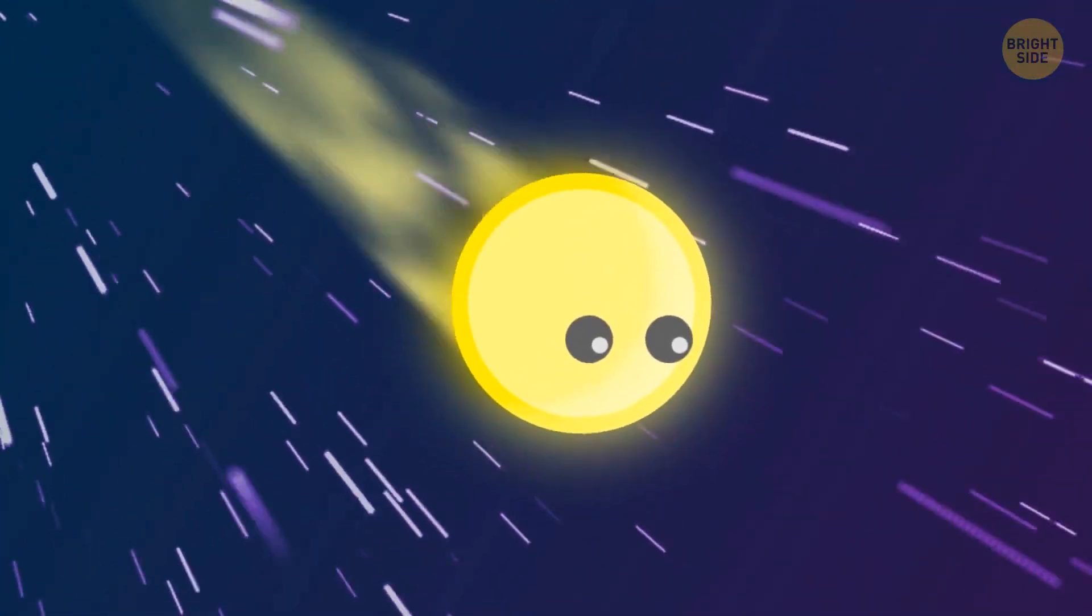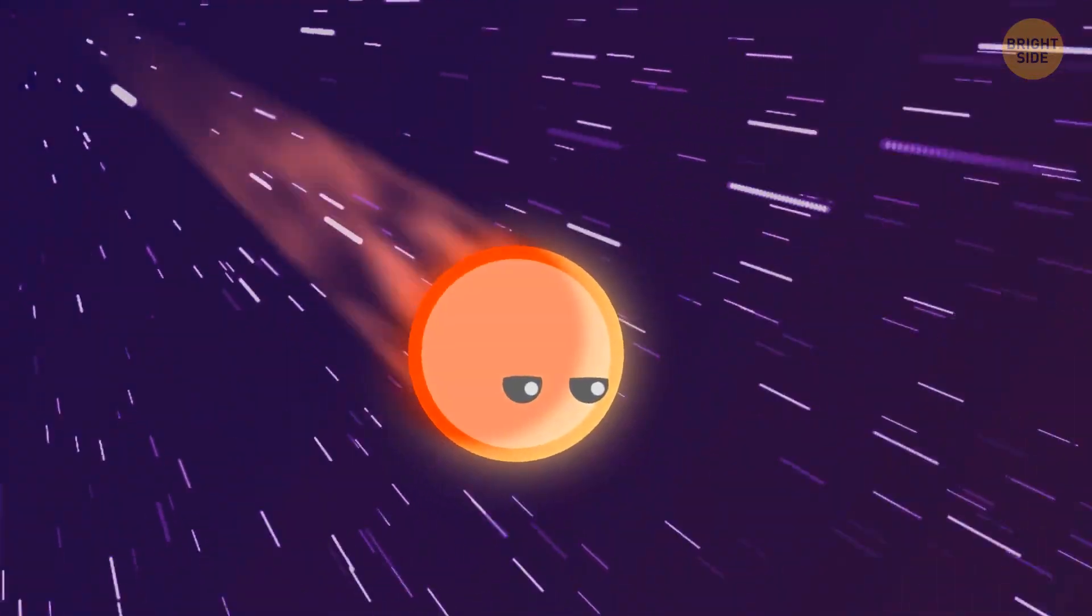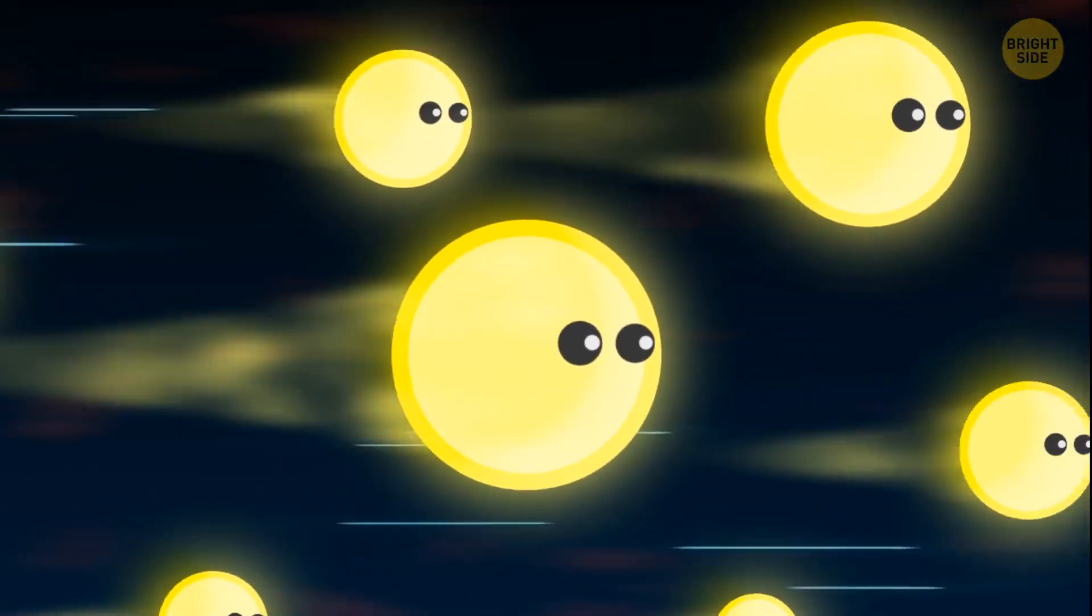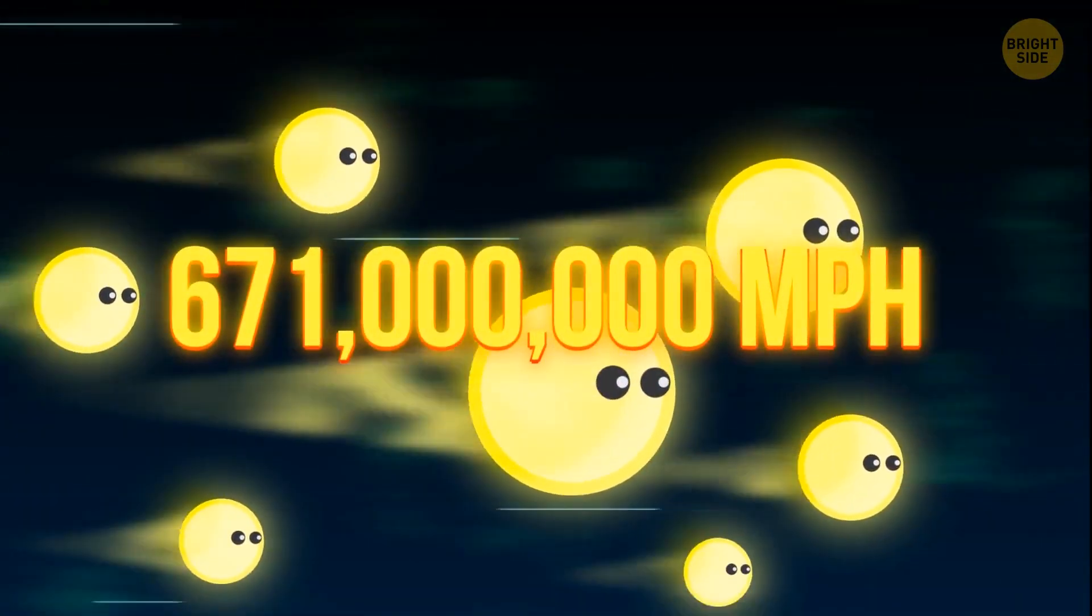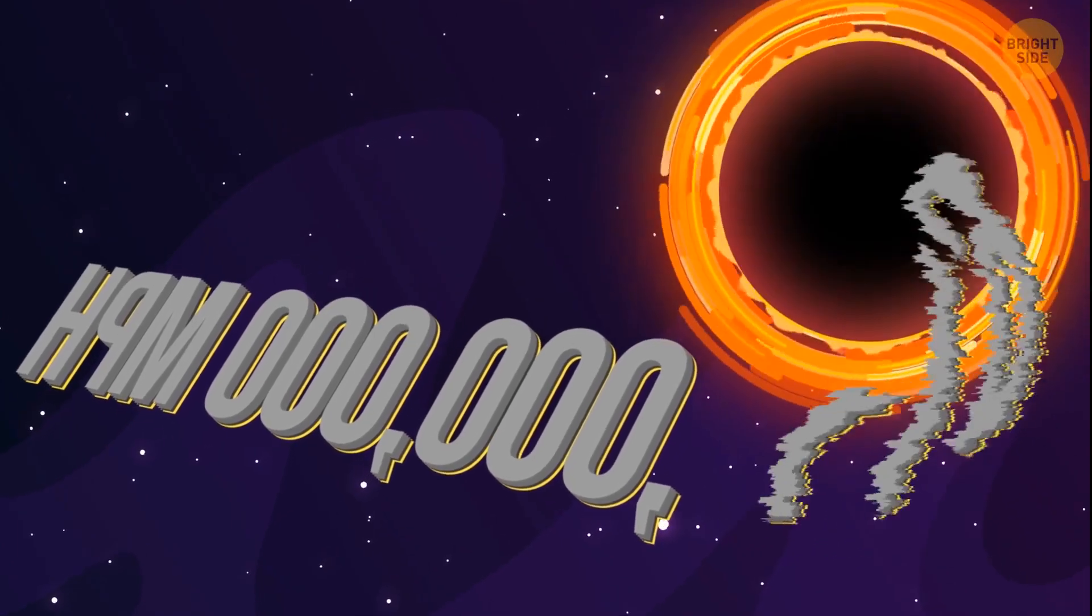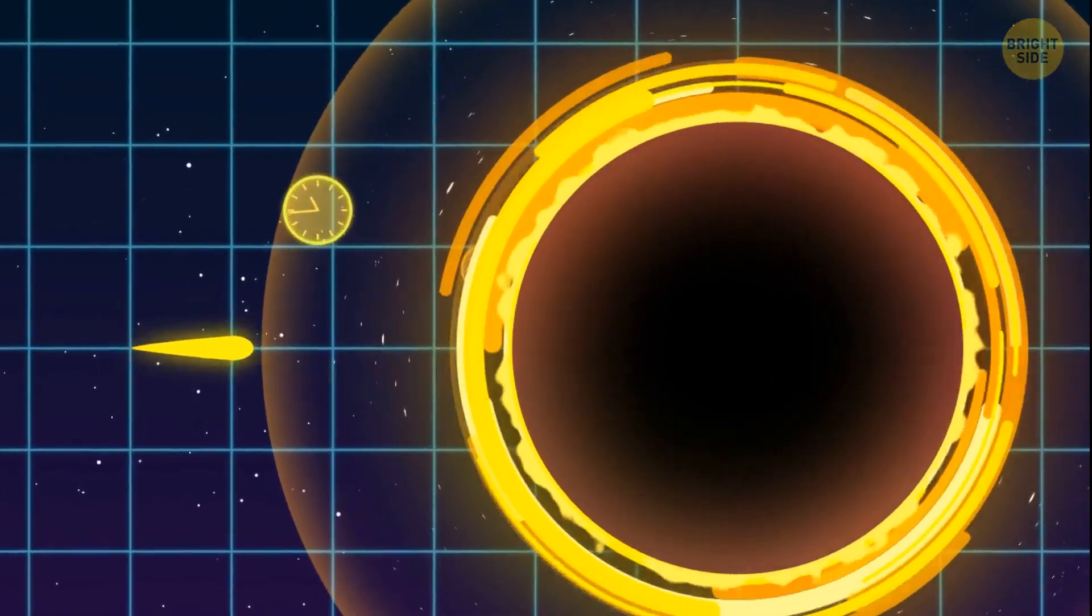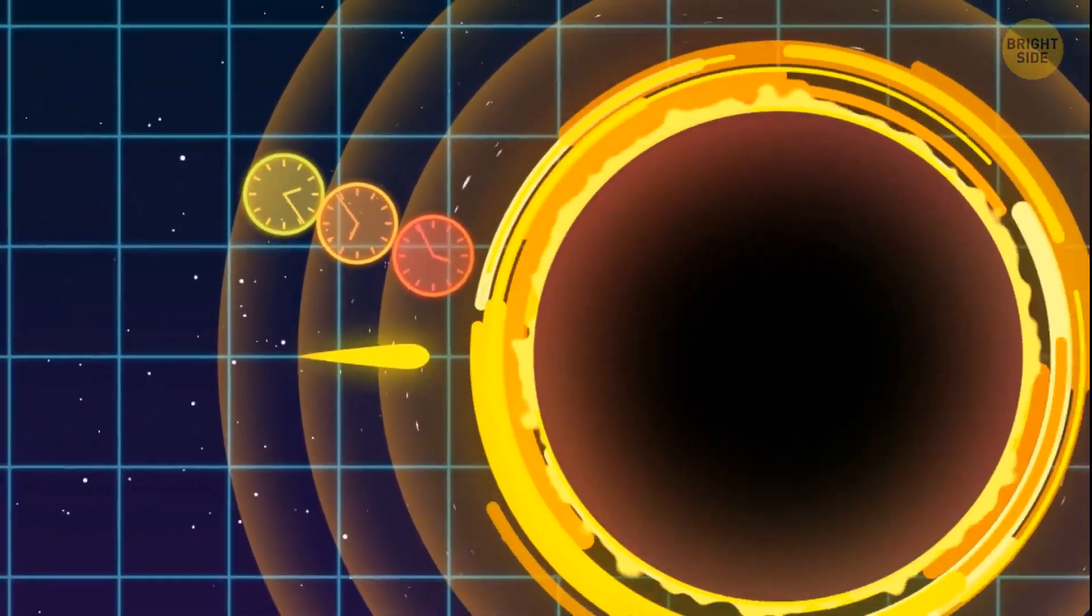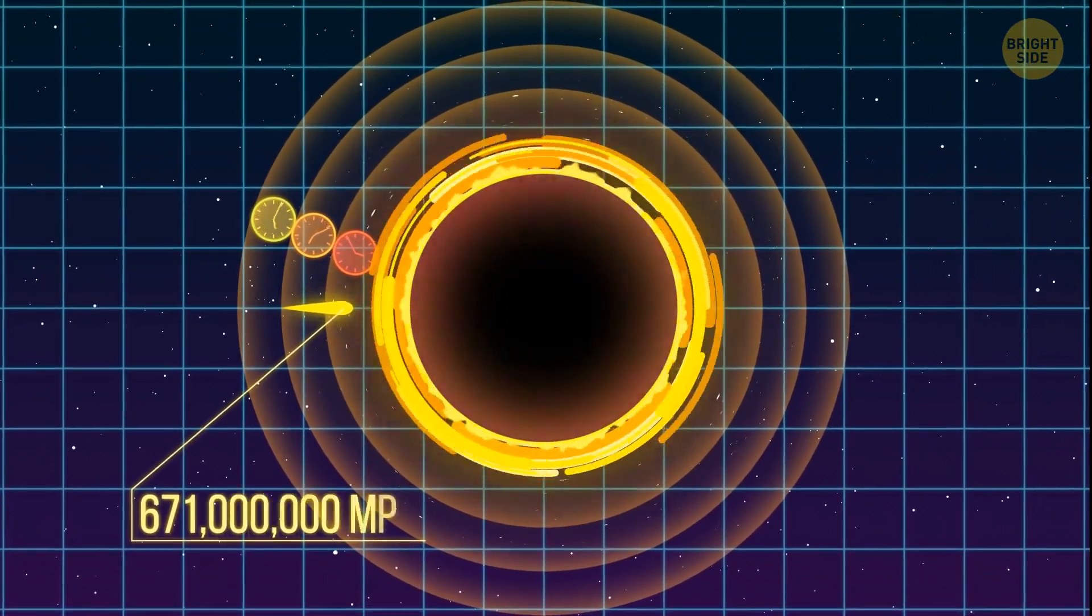Usually this would mean that the photon was moving at a low speed in the second case, but not in the case of the speed of light. Remember, it must be the same at every point in the universe. The number 671 million miles per hour shouldn't change. So we change the very parameters of that number: time. Time itself must slow down so much that the slight movement of the photon when you look at it from above was at the same speed, 671 million miles per hour.